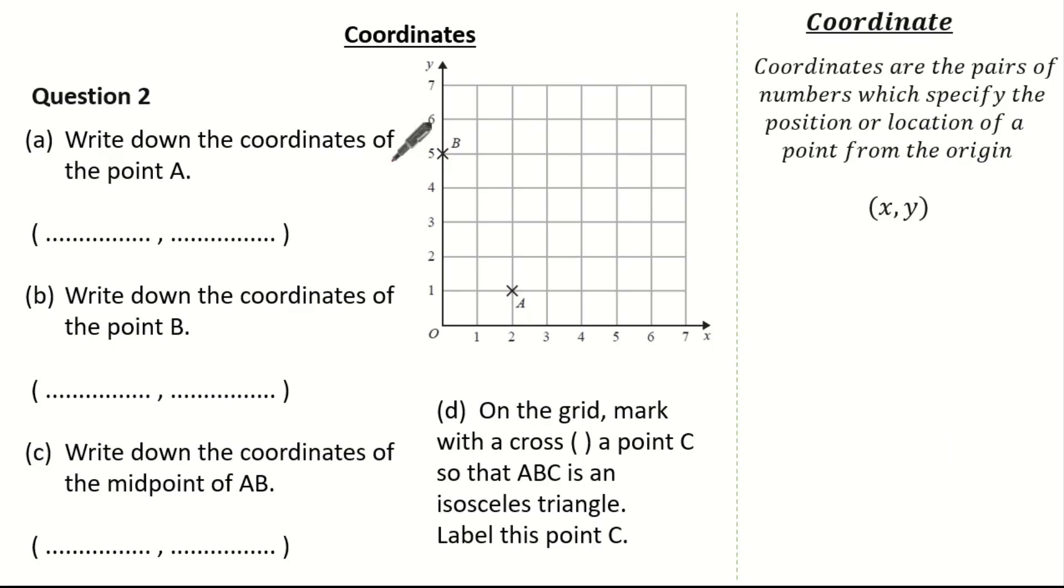So writing down the coordinates of a remember we start from the origin so we've gone across 2 up 1 so the coordinate is 2, 1. Writing the coordinates of b remember we start from the origin where we haven't gone across any so it's 0 but we've gone up 5 so it's 5.